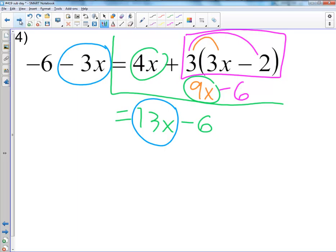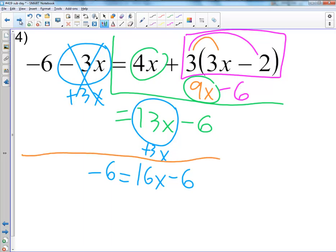If you're ever stuck, just circle the variables, and it will literally scream out what to do. Where do I have more x's? On the right side. Do the opposite. So I'm going to add 3x to both sides. I'm left with 16x minus 6. And now at this point, I'm going to just rewrite the negative 6. Circle the variable, take care of the hater. Add 6 to both sides. I get 16x equals 0. Therefore, x equals 0.